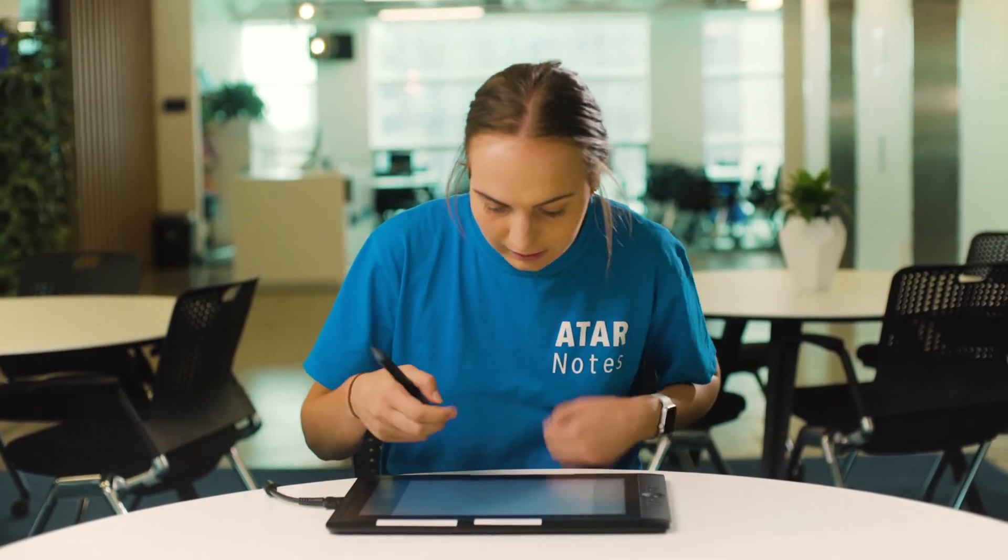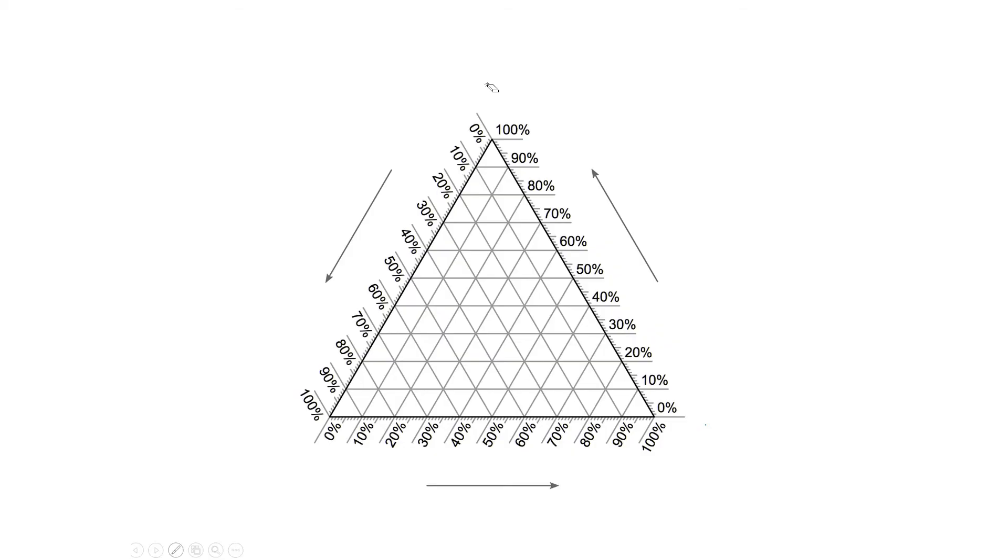Now, on the screen we have an example of a basic ternary graph. So at each of the apexes of the triangle, we have a different component. So in this case we have component A, component B, and component C.